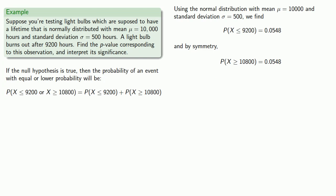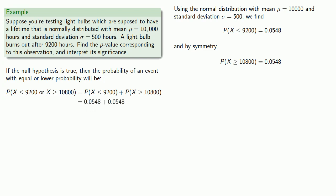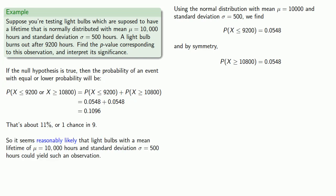Substituting these in, we find that the probability of observing an event with equal or lower probability is 0.1096. That's about 11%, or roughly speaking, one chance in 9. So it seems reasonably likely that light bulbs with a mean lifetime of 10,000 hours and standard deviation of 500 hours could yield such an observation.